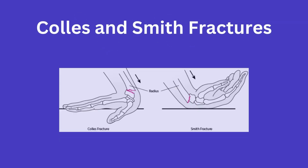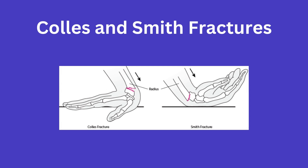We have the Colles' and Smith fractures, which are essentially opposites of one another. A Colles' fracture involves a dorsally displaced fracture, and a Smith's involves a ventrally displaced fracture. The displaced distal component moves with the direction of the hand at the time of injury, so with an extended wrist you see dorsal displacement, and vice versa.